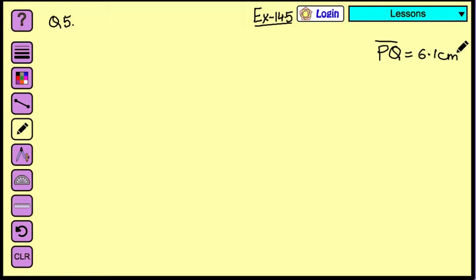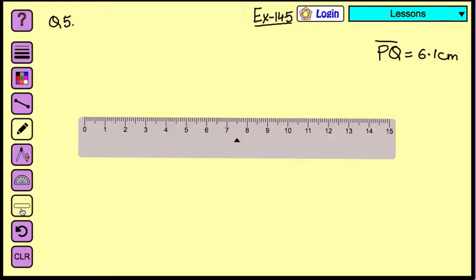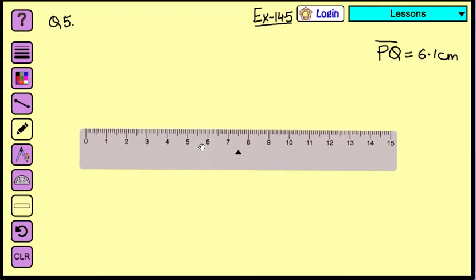Now to draw a line we need a ruler. Let's take the ruler. Now we are going to draw a line of 6.1 cm. From 0 we will start and draw the line.